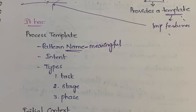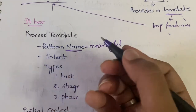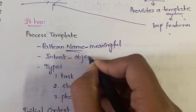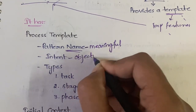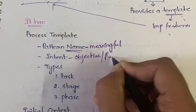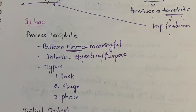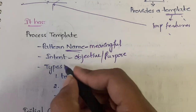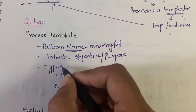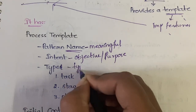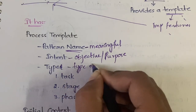Next is intent. Intent is the objective of the pattern — or to be more clear, you can say purpose: what is the use, what is the need of the pattern — that is called intent. And types: this will indicate the type of the pattern.